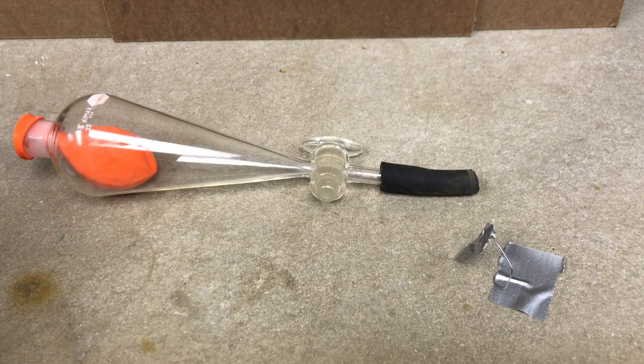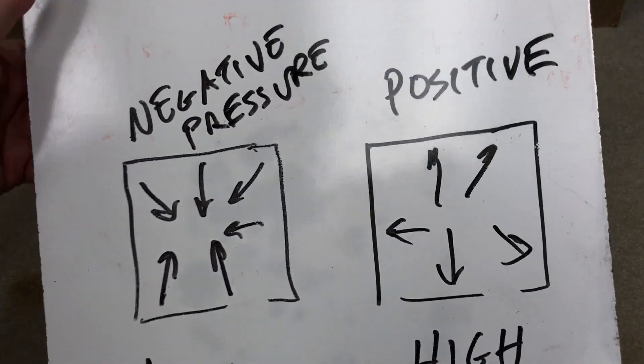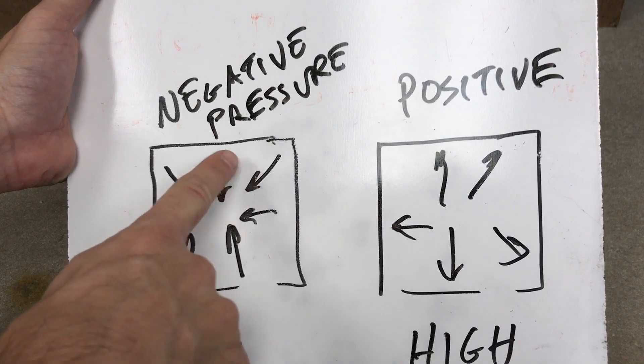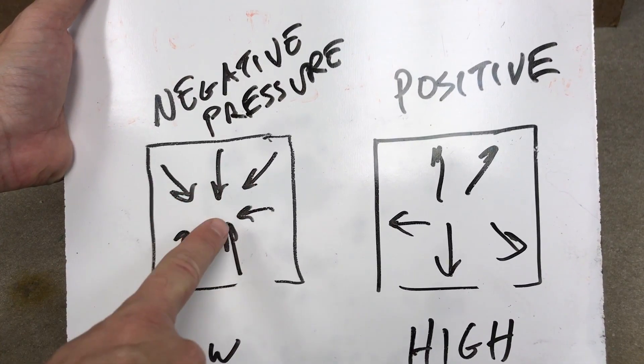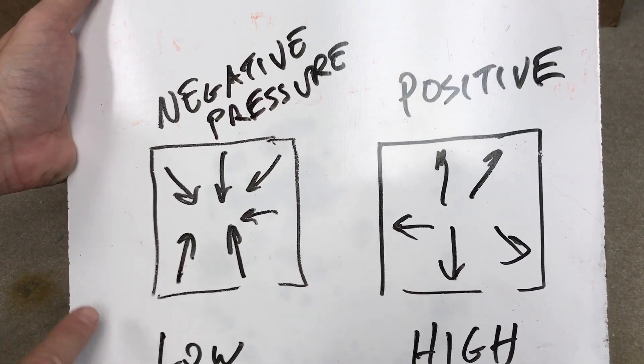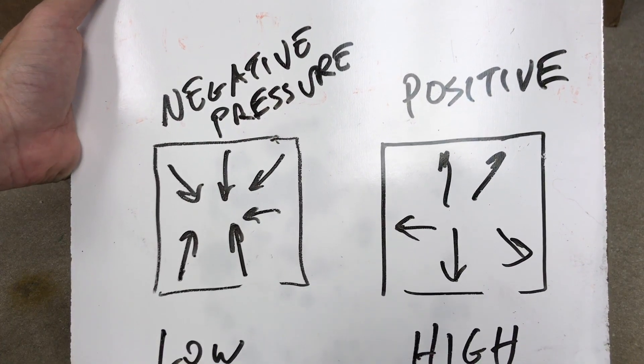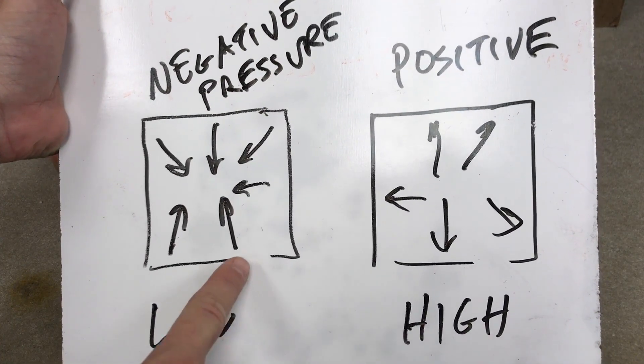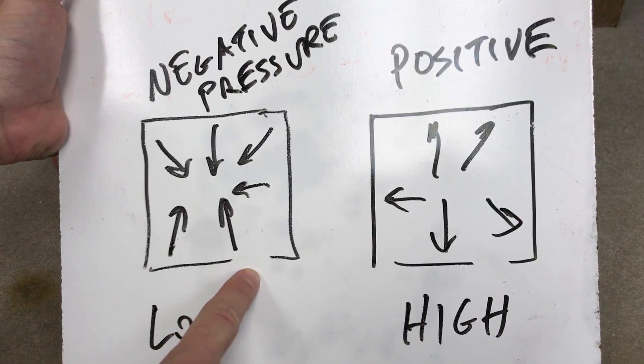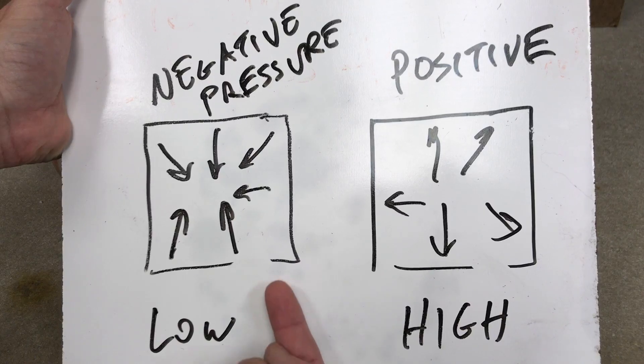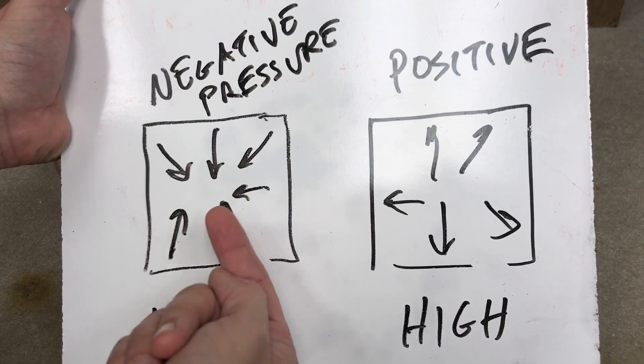So in that case there's two options you could do. You could do what we call negative pressure. So negative pressure is where the pressure inside the area is lower than the pressure outside and so we have this area of low pressure in there. If that's the case and we have a hole in it and a hole in the suit then what happens is since the pressure is greater outside of here it rushes in so that's bad.